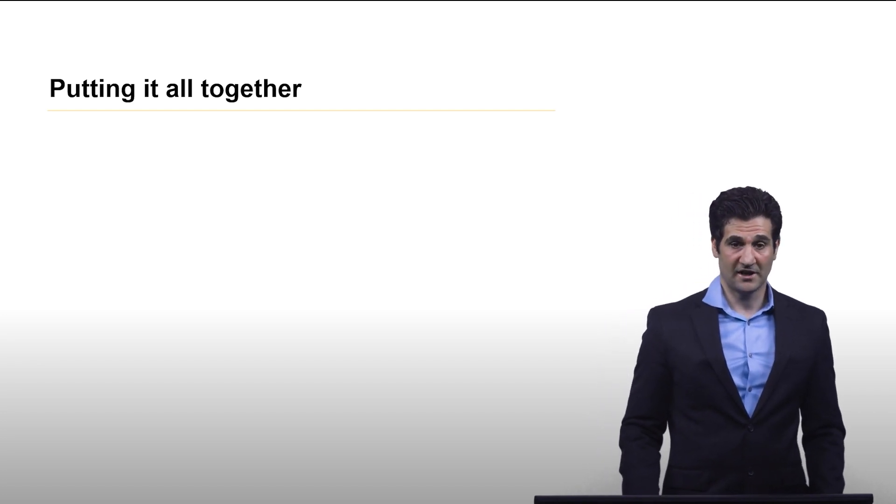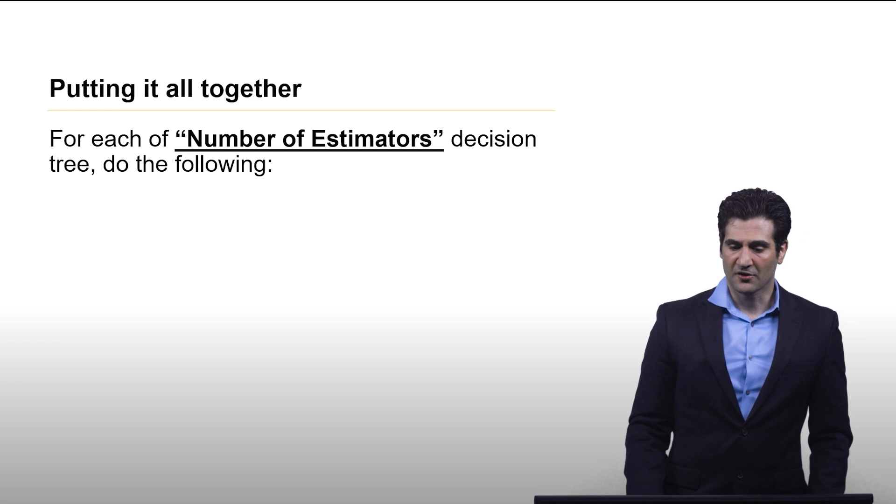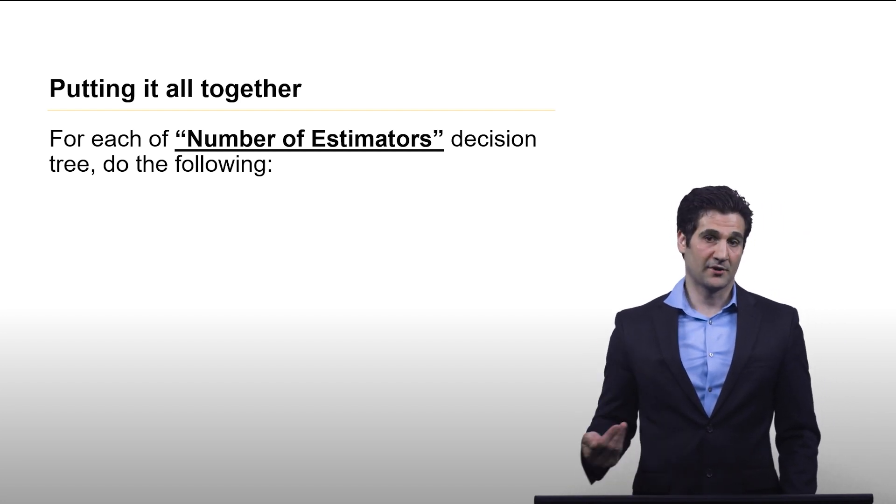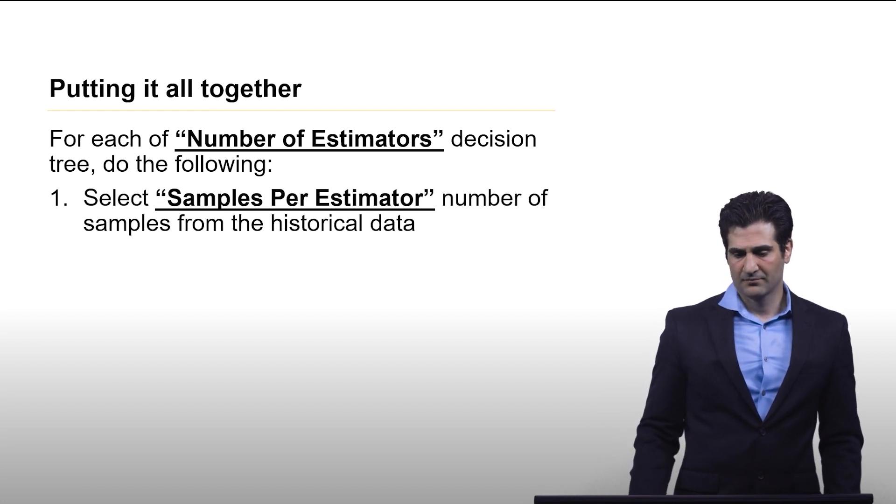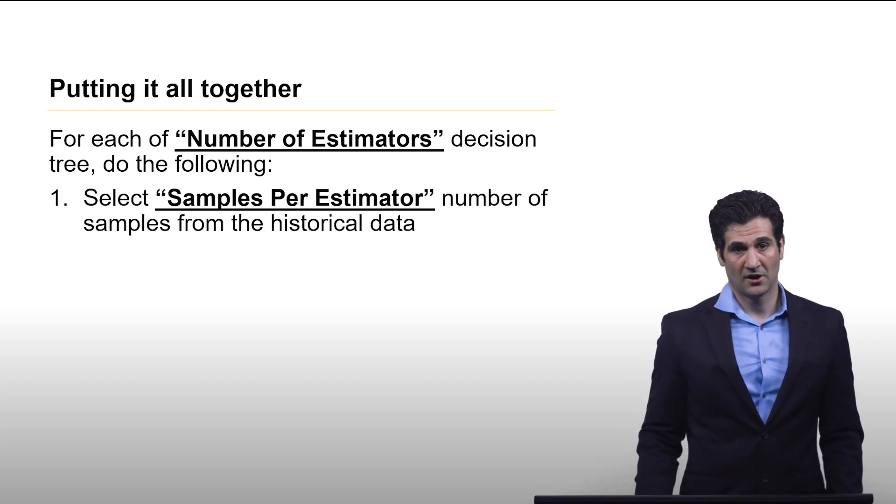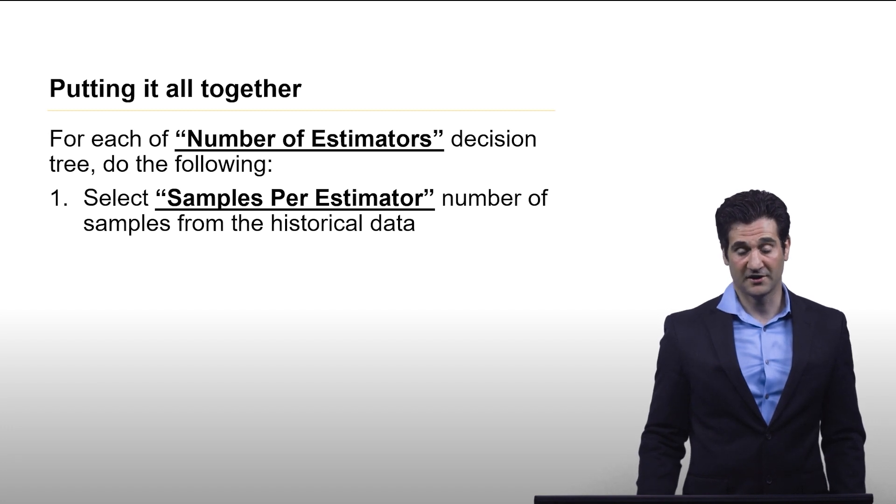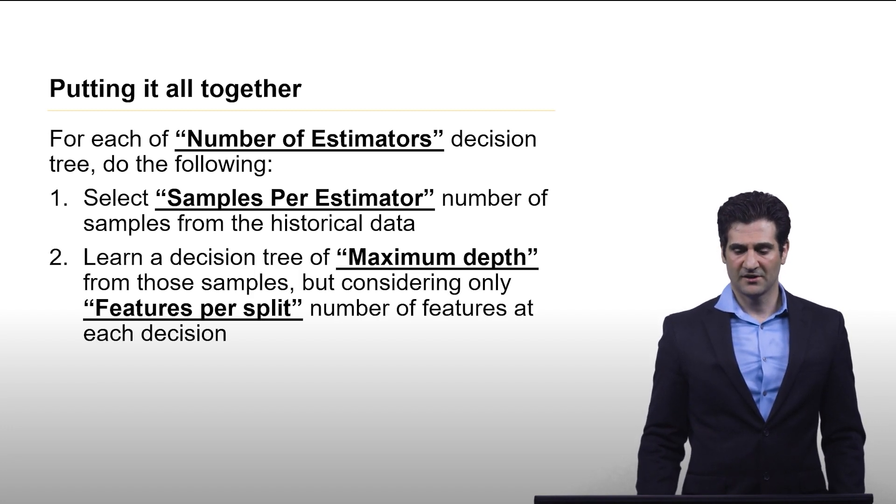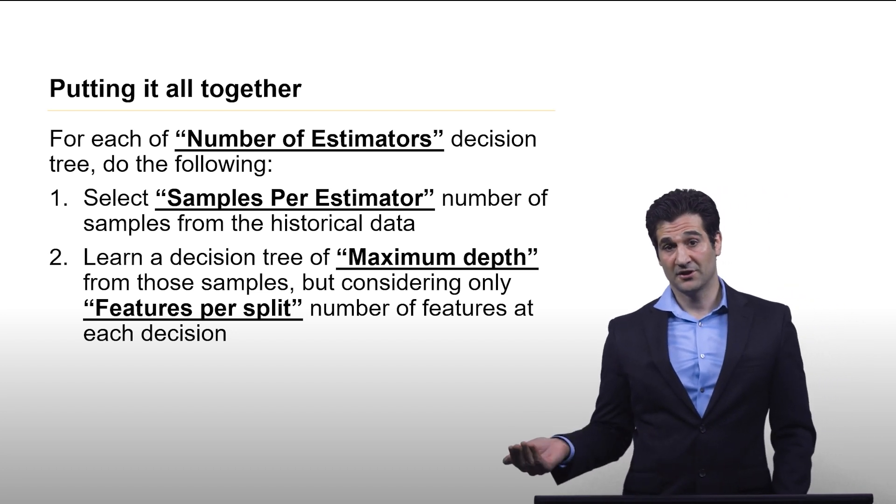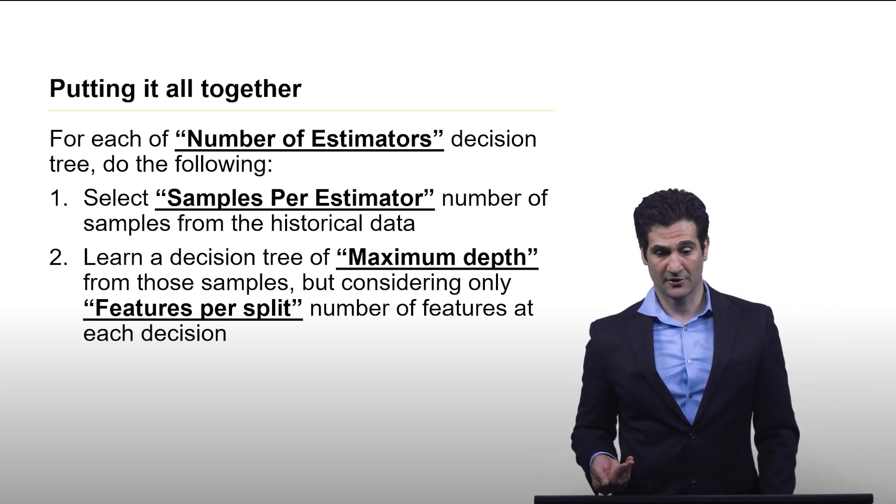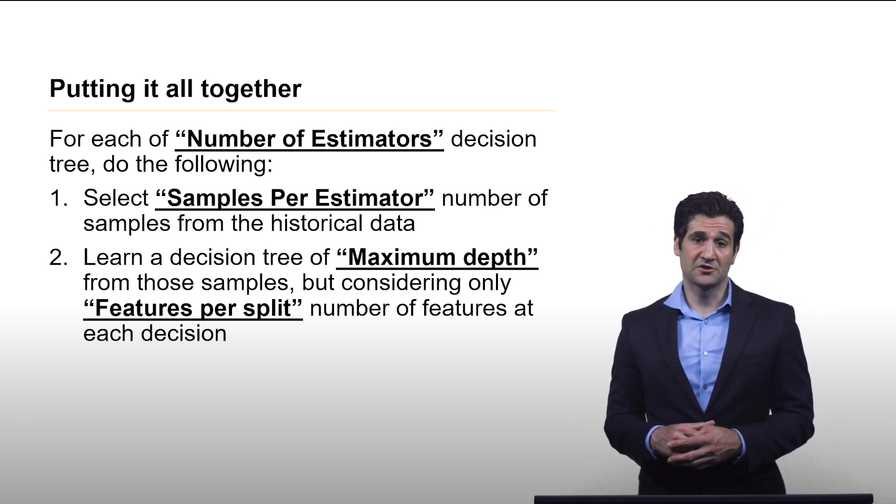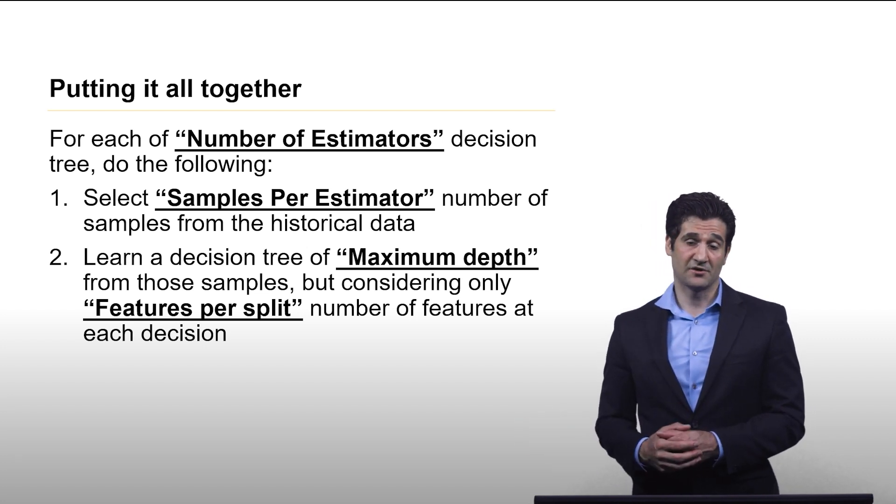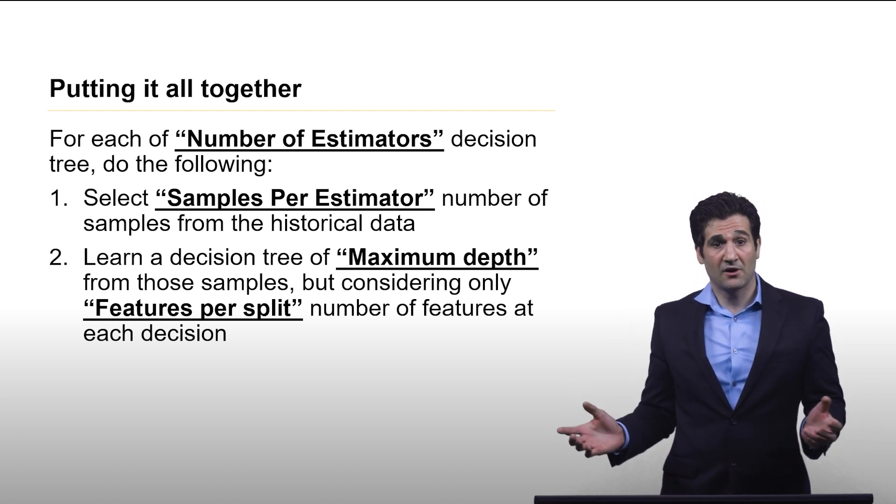So when we put this all together, how does this work? For each of the number of decision trees we're going to create, we're going to do the following: We're going to simply take a subsample of the historical data or the training data rather, and then we are going to learn a decision tree using the maximum depth parameter. But we're going to only consider the specified number of features per split. Those features will be selected randomly at each decision node in the decision tree. And this is all there is to it.